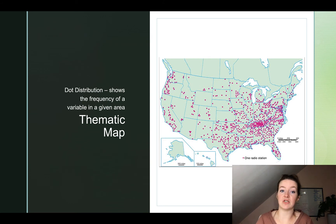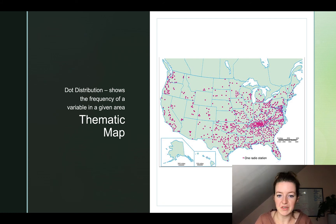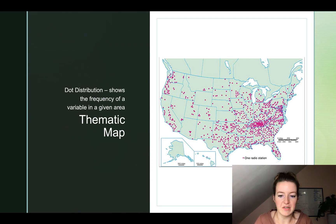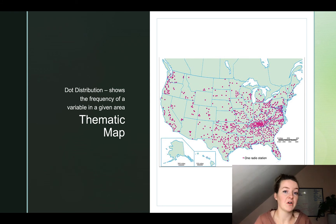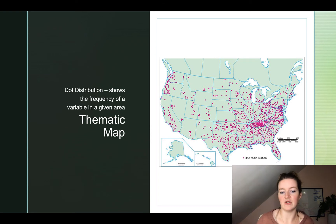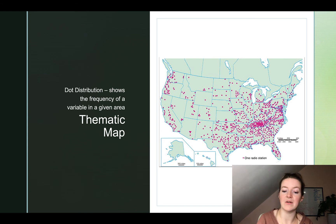Next up in thematic maps we have dot distribution maps. These show the frequency of a variable in a given area, represented with dots. Looking at this map, one dot equals one radio station. Take a moment and notice where there are the most radio stations. Also consider why certain states have fewer radio stations and write that down in your notes. Alaska doesn't have any, and Hawaii only has one.